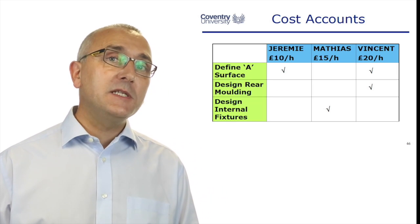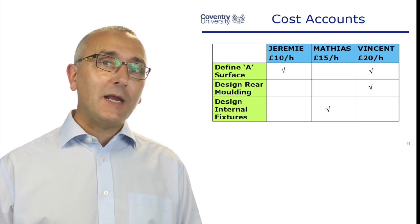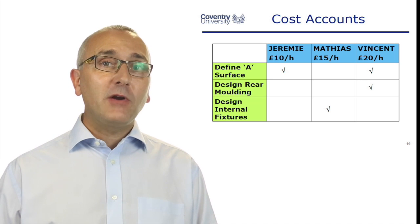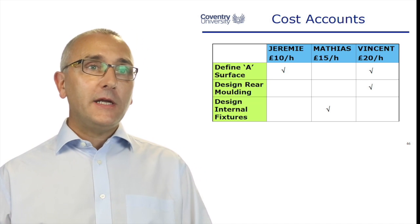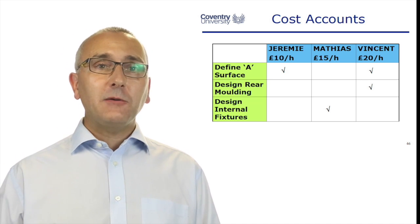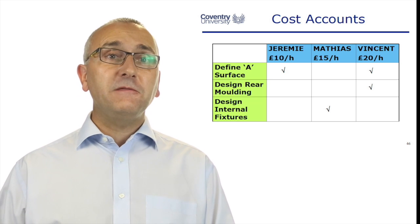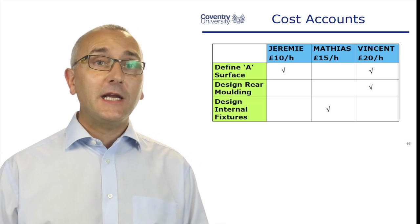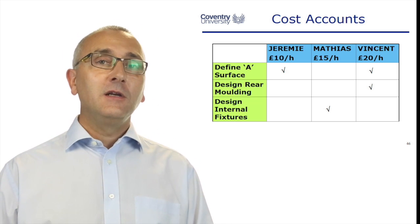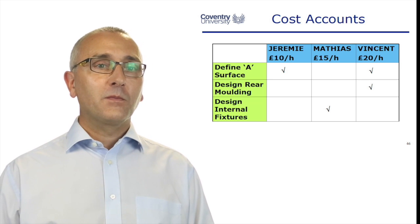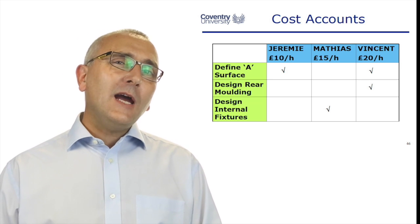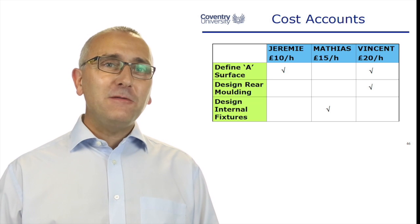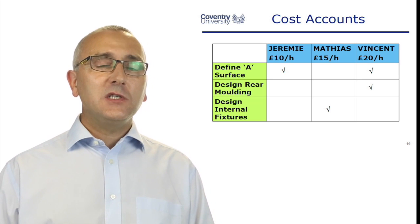Let's take the responsibility matrix we had before and now add in the pay rates for the people. Jeremy is £10 an hour, Matthias is £15 an hour, and Vincent is £20 an hour — he's the senior person on the job. And now we get people to estimate the effort to do the tasks.